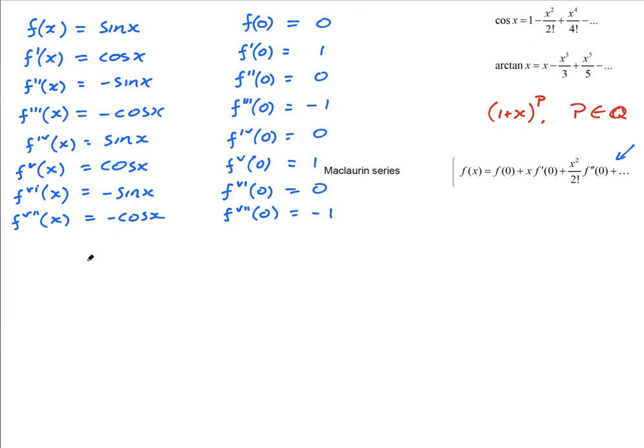Okay, so this is my Maclaurin series. I'm going to sub these into this. So f of x is approximately equal to—it is equal to it when it goes on forever, but he's only asking me to find the term up to x to the power of seven, so I'm going to put in the approximately equals.